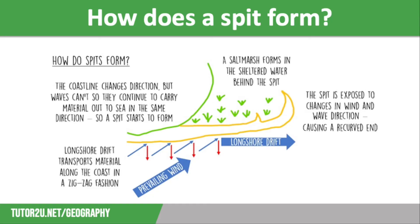There may also be old recurves further down the spit that mark the former end of the spit. Behind the spit, a salt marsh will develop in the sheltered, shallow water. These are areas of high biodiversity and are often classed as nature reserves or sites of special scientific interest, also known as SSSIs.